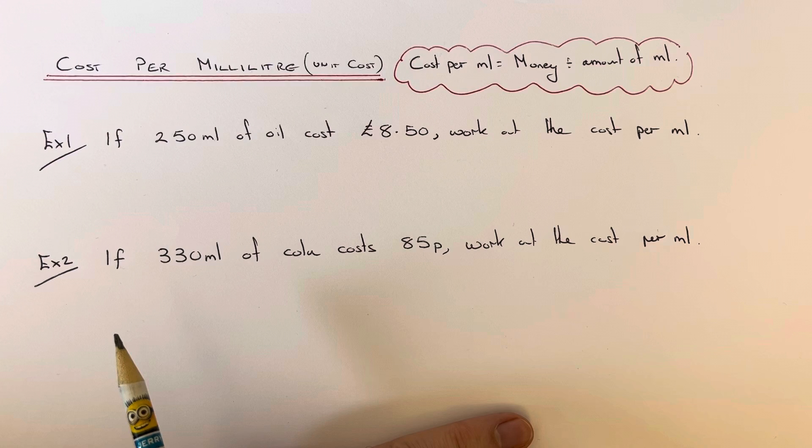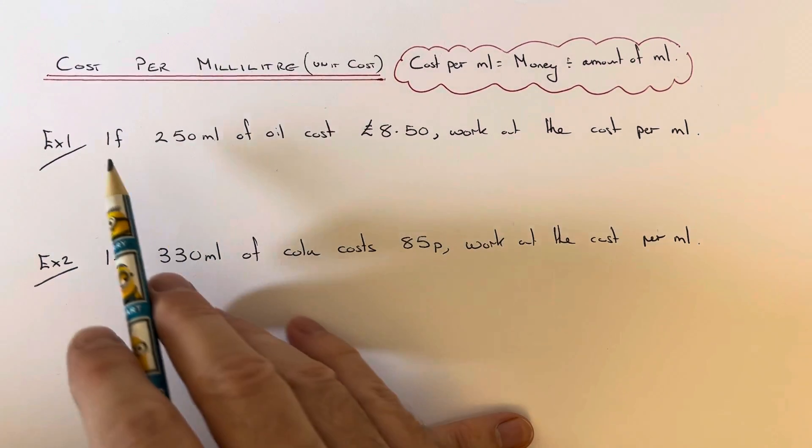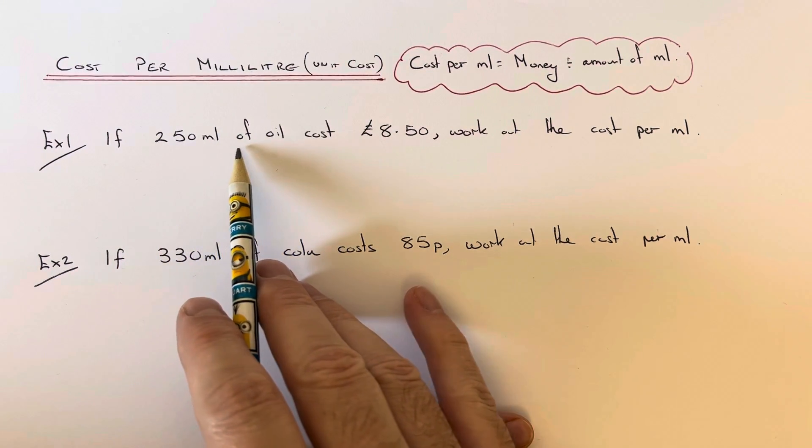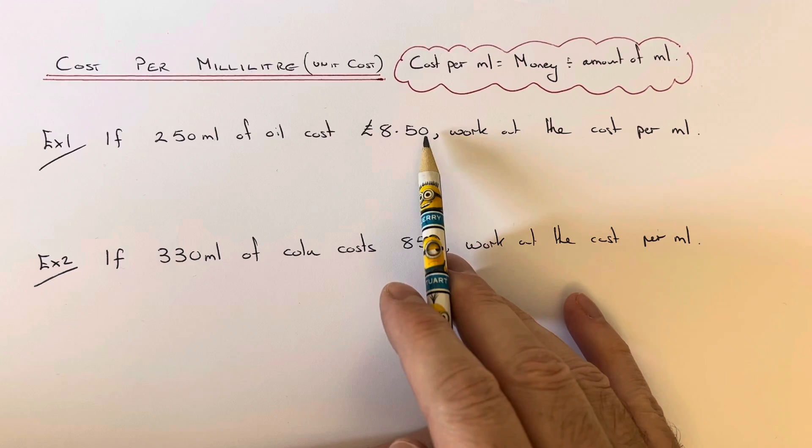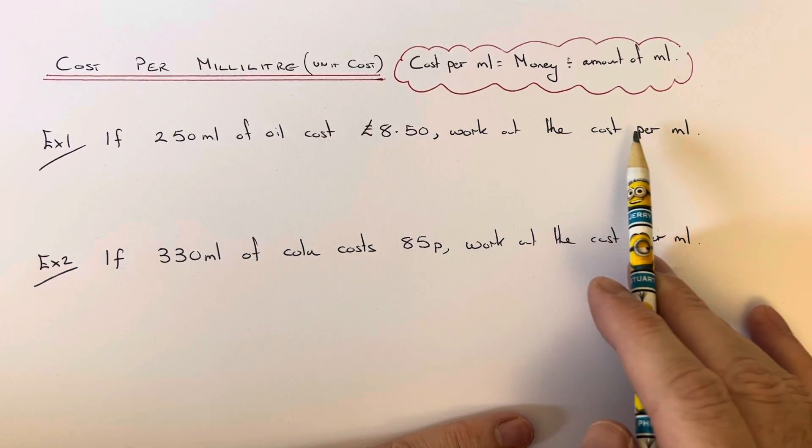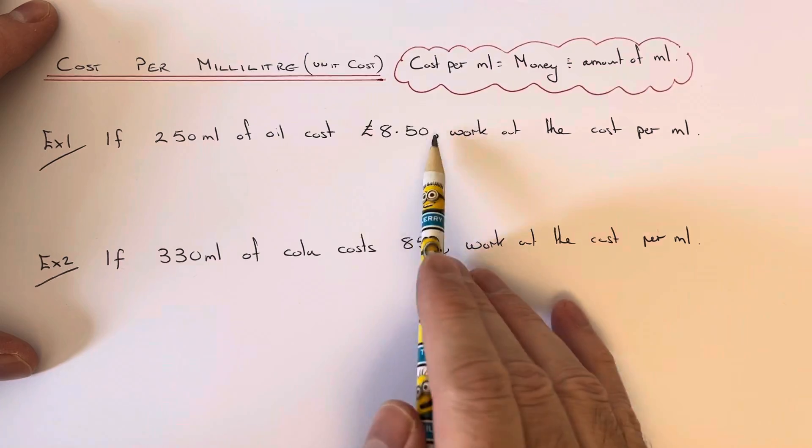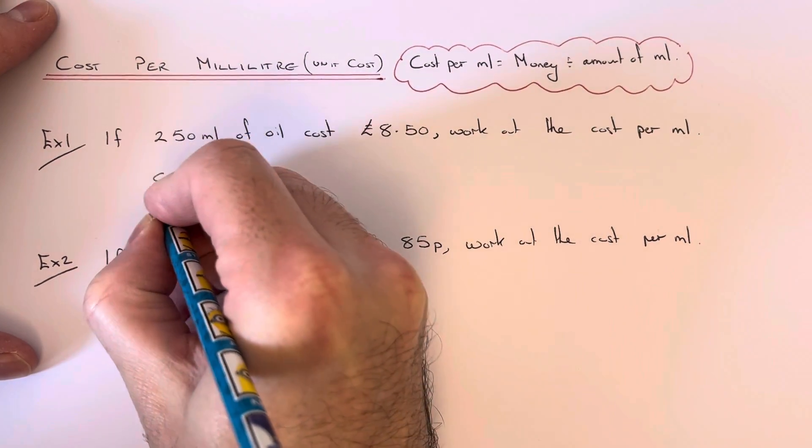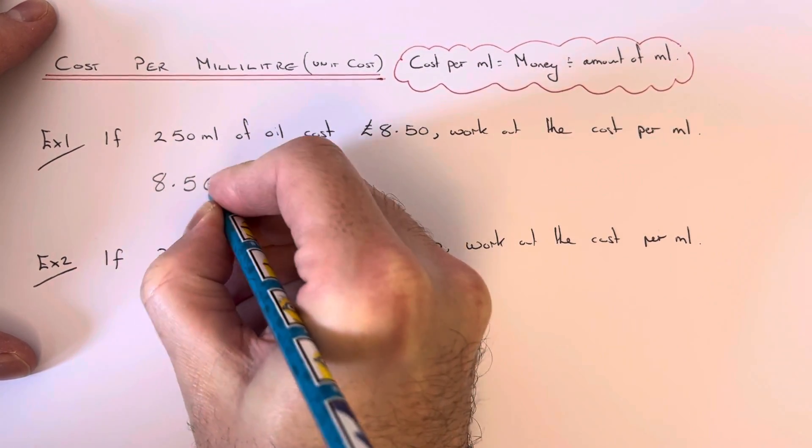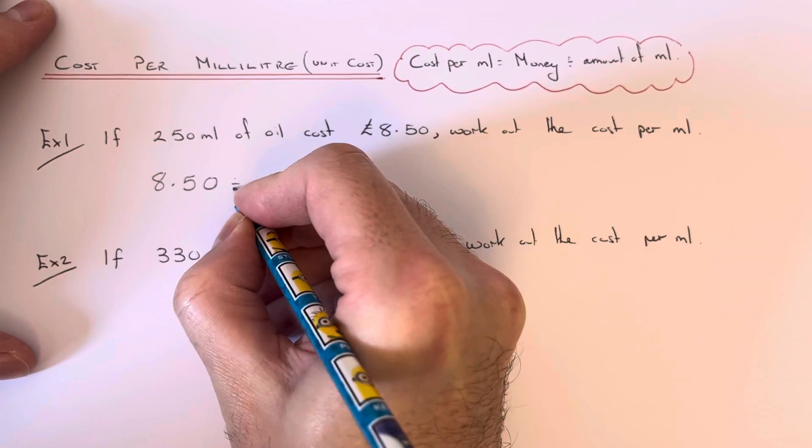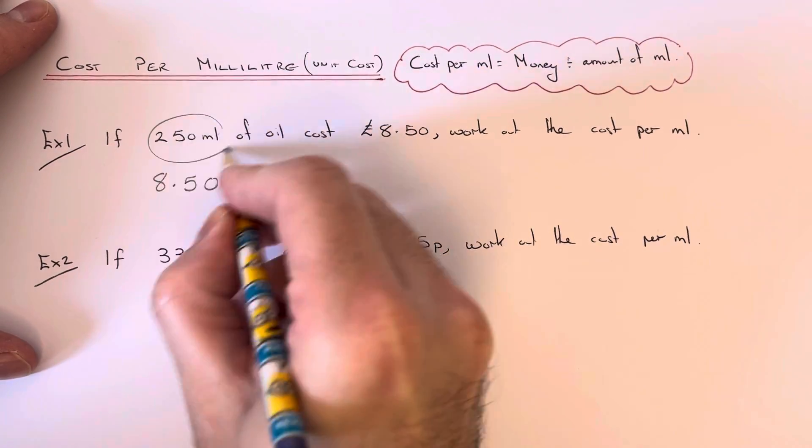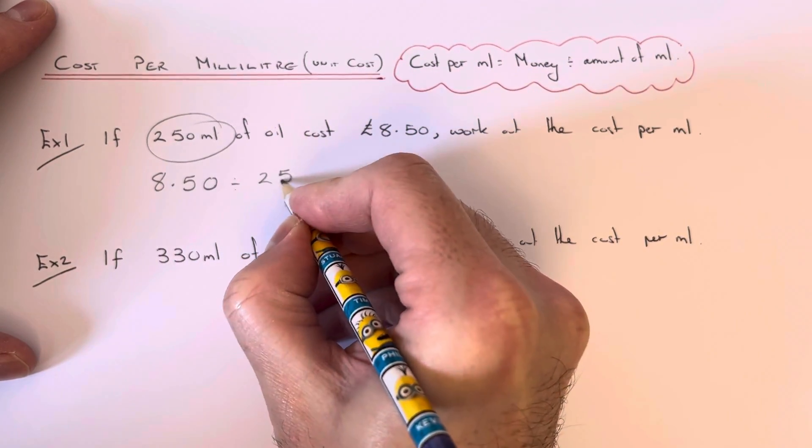Let's have a look at the two examples here. Example one: if 250 milliliters of oil cost eight pound fifty, work out the cost per milliliter. If we get our money first, which is eight pound fifty, and we divide that by the number of milliliters we are buying, which is 250.